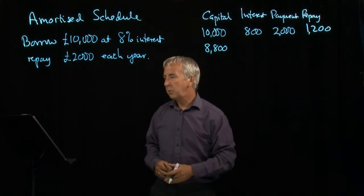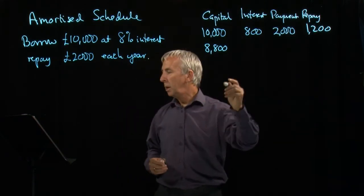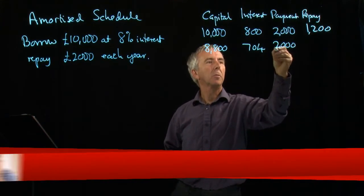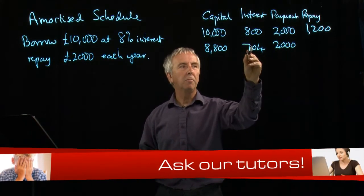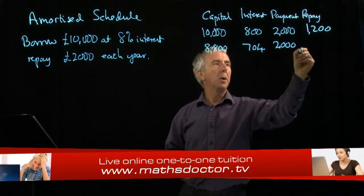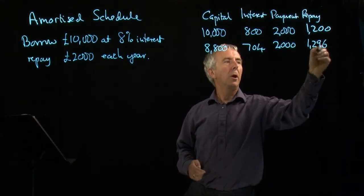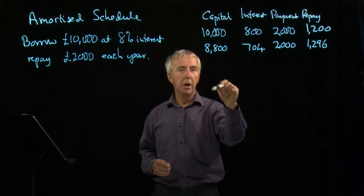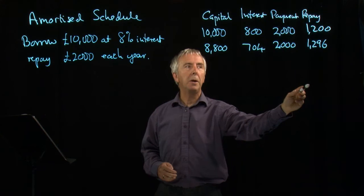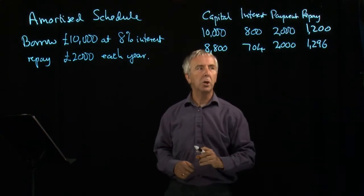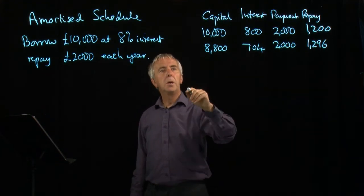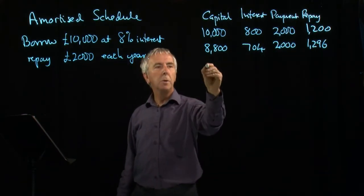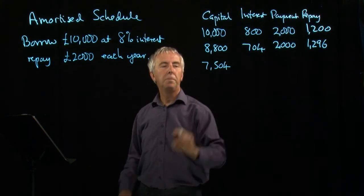Then we go through the process again. 8% of £8,800 is £704. I'm still paying £2,000 each year — that never changes. But out of that, £704 is taken as interest, so what I've actually repaid is £1,296. Notice the pattern: the interest is going to go down each year because I owe less, so the amount repaid goes up by the same amount, because the total of the two is always £2,000. So at the beginning of year three, I owe £7,504.